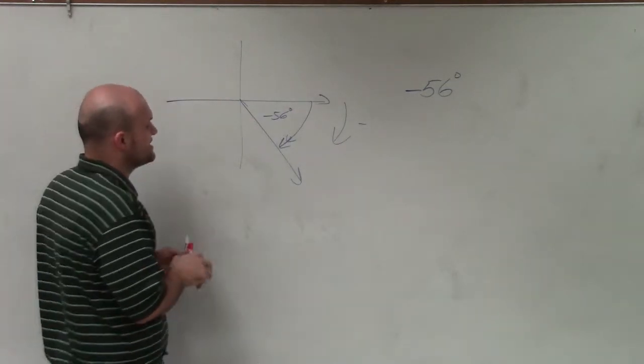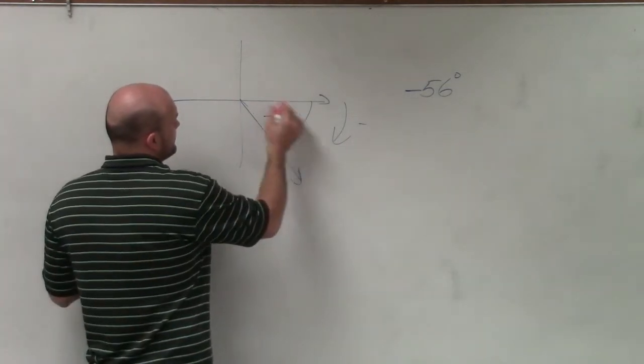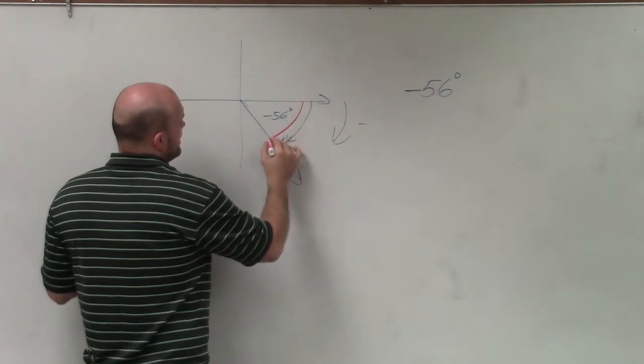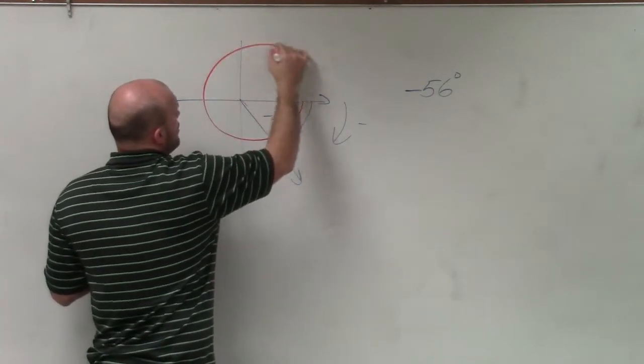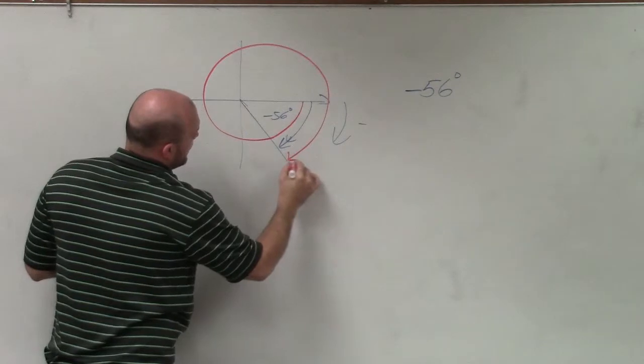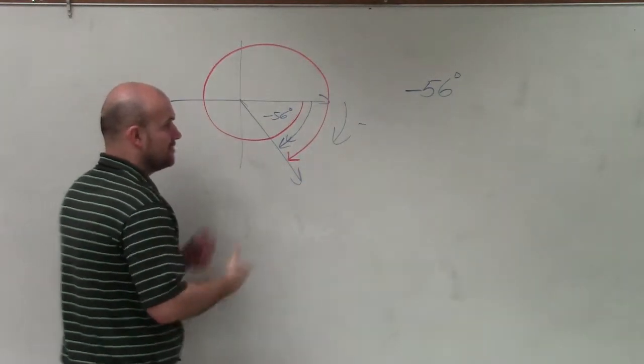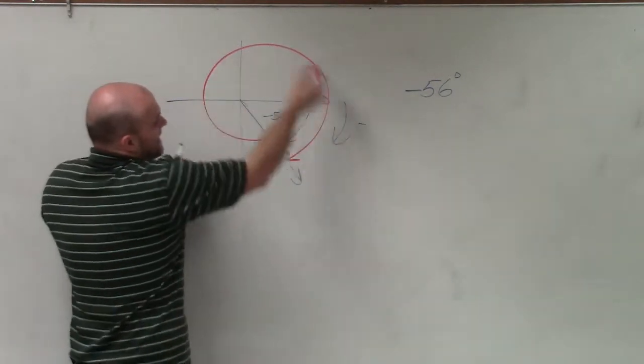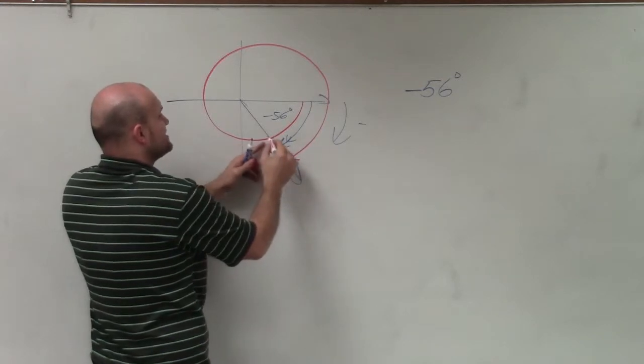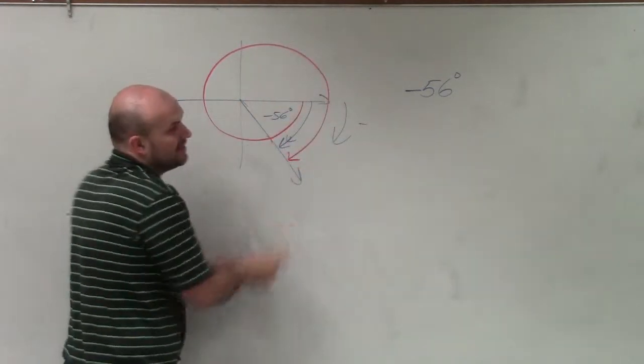So the way that I can do that is I can just continue the angle. So let's say I go to here, and if I continue the angle all the way around and then complete it, therefore that angle has the same initial and the same terminal.